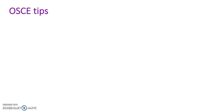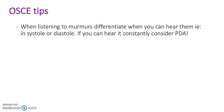Some OSCE tips for you: when listening to murmurs, try and differentiate when you can hear them. Are they in systole or are they in diastole? If you can hear it constantly, consider a PDA. Maybe go online and look at some videos of murmurs — listen to the differences and really test yourself on them.